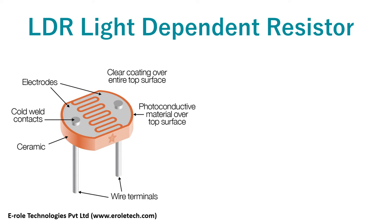This is an LDR. It has two terminals. When light falls on the LDR, the resistance between these two terminals decreases.